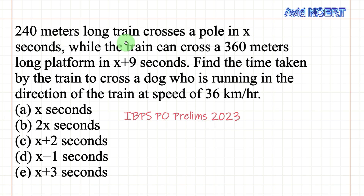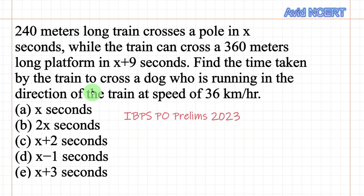A 240 meters long train crosses a pole in x seconds, while the train can cross a 360 meters long platform in x plus 9 seconds. Find the time taken by the train to cross a dog who is running in the direction of the train at a speed of 36 kilometers per hour.